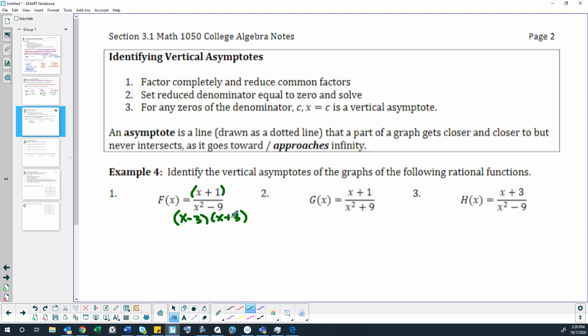Now if we have any identical factors on the numerator and denominator, we can reduce them or cancel them out. That's not the case. We can't reduce anything. So in this case, we have two asymptotes. We have one at x equals 3 and we have x equals negative 3.